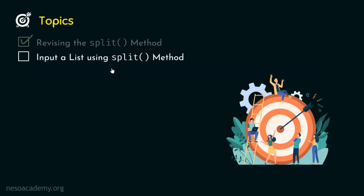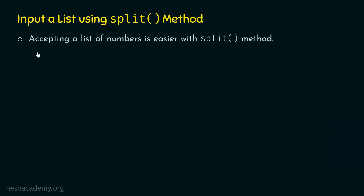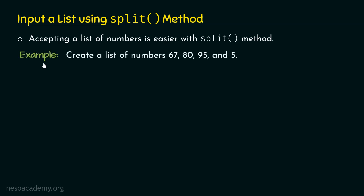Now let's move on to the next topic: inputting a list using the split method. Accepting a list of numbers is easier with the split method. We can use the split method to accept a list of numbers from the user and store them as individual items. For example, let's say we want to create a list of numbers: 67, 80, 95, and 5 — a total of four items.